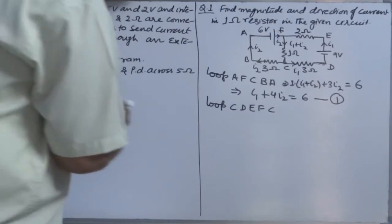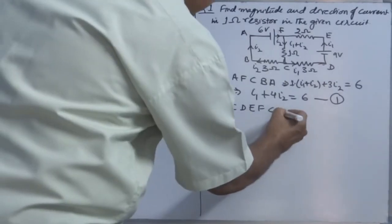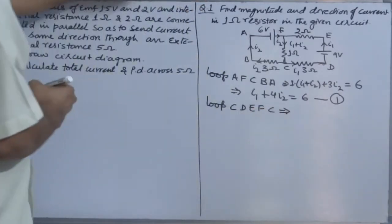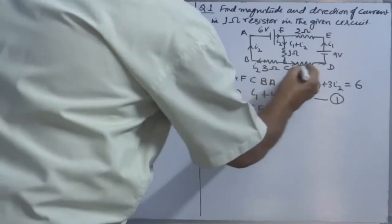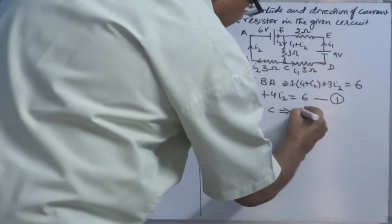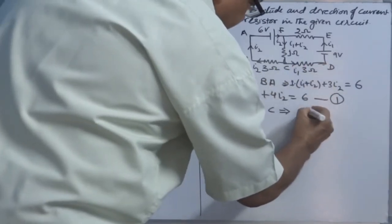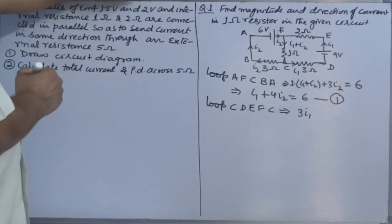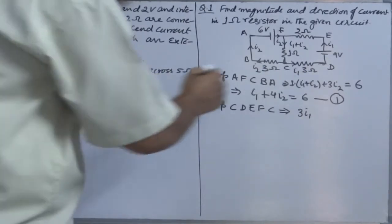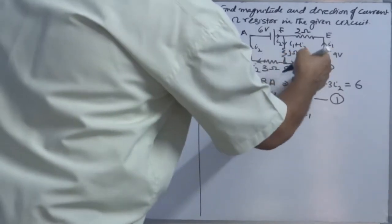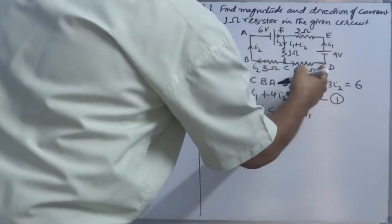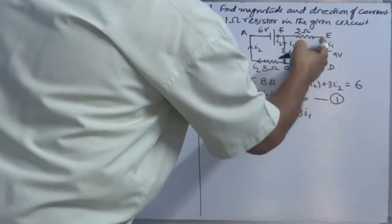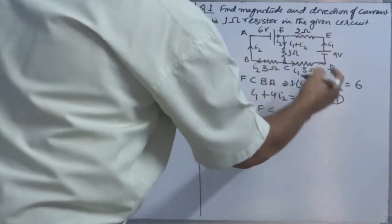In the second loop CDEFC, we look at C: the direction of current gives 3I1. Then moving from D to E, we again interact with the negative terminal first.